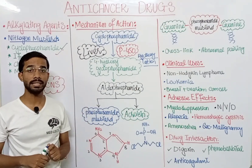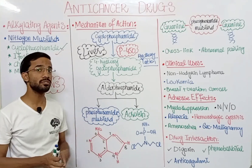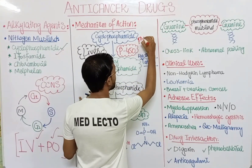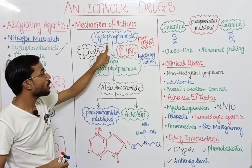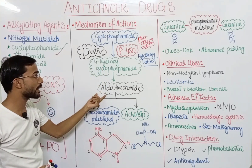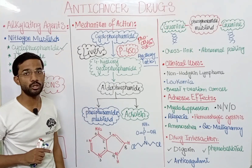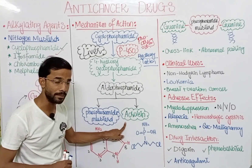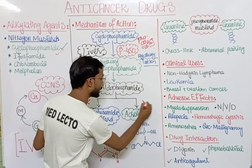The active form of cyclophosphamide is produced later, which is why we say cyclophosphamide is actually a pro-drug. After conversion to 4-hydroxy cyclophosphamide, it converts into aldophosphamide, which then breaks into two compounds: phosphoramide mustard and acrolein. These two compounds are very important.